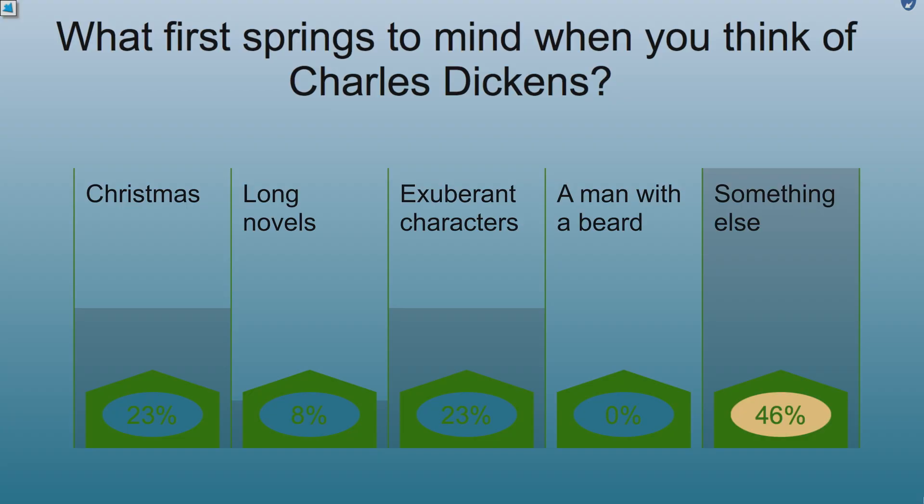The first theme is Reputations. From the poll about Charles Dickens, 46% said something else, 23% said Christmas, and 23% said exuberant characters. In Reputations, we ask that sort of question to start with, because it's partly about thinking about your own assumptions and expectations that you might bring to study. There's no right or wrong answer, but it's interesting to think about your own starting places and how these reputations might have developed.